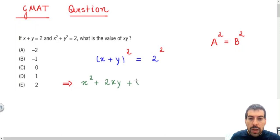plus y squared, and in the right side, you have 2 to the power of 2 equals 4.